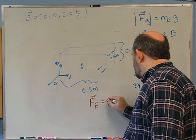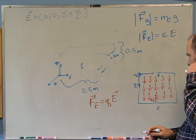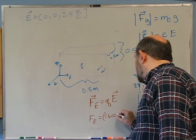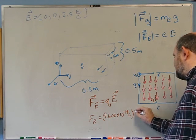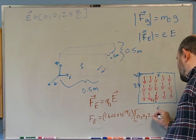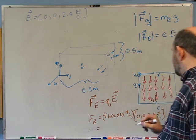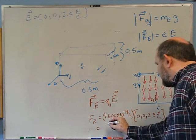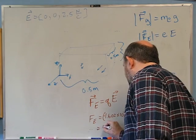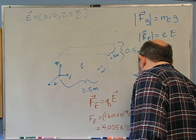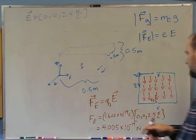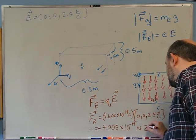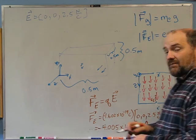The charge on the electron is -1.602 × 10⁻¹⁹ coulombs. Multiplying by the electric field vector (0, 0, 2.5) newtons per coulomb, the force is in the negative-Z direction — upward — since we have a negative charge times a positive field. Calculating: the force is approximately -4.005 × 10⁻¹⁹ newtons in the z-hat direction. From that force we can figure out the acceleration.